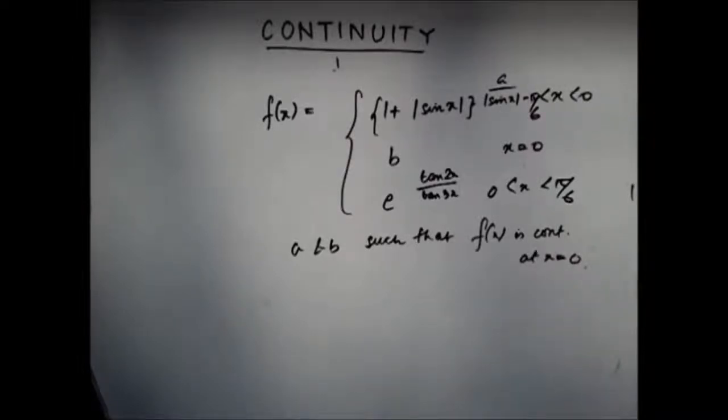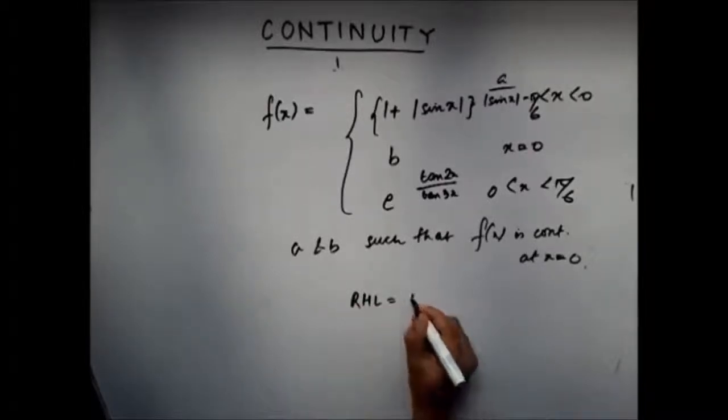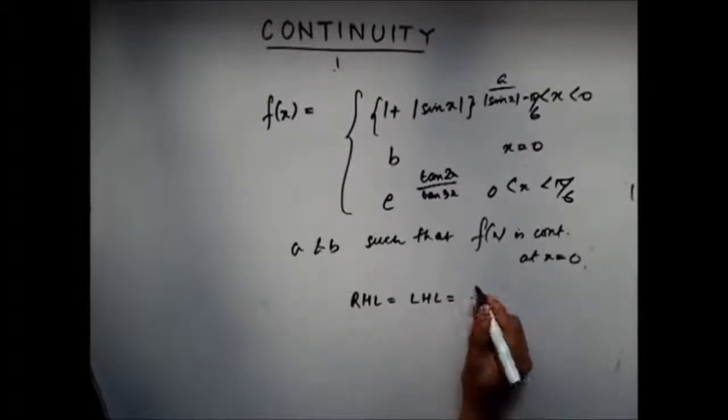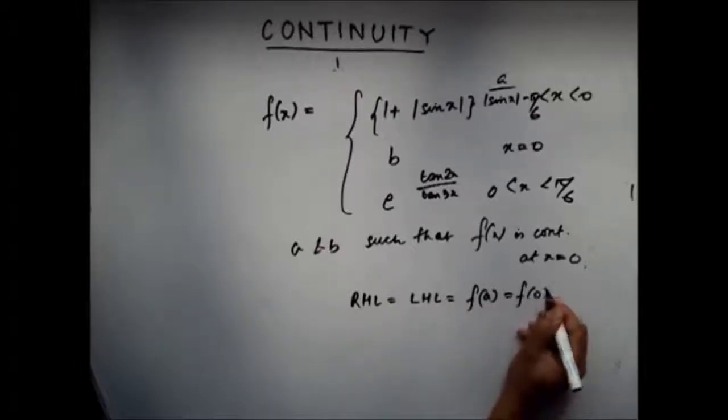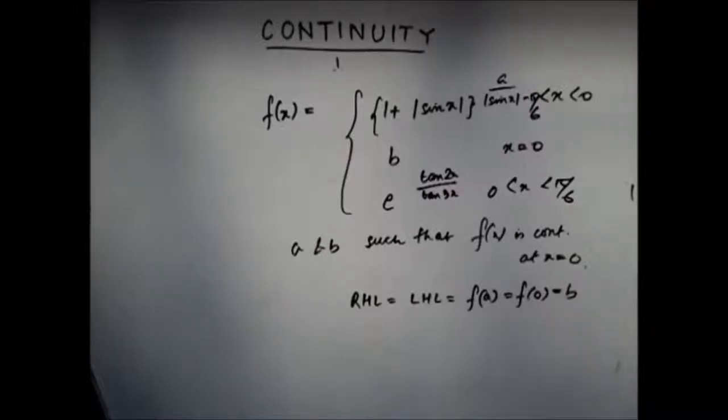You know that the condition to prove that a function is continuous at a particular point is that the right-hand limit should be equal to the left-hand limit and should be equal to the functional value, which is f(0), which is b in this case. Now let's see what the right-hand limit and left-hand limits are.